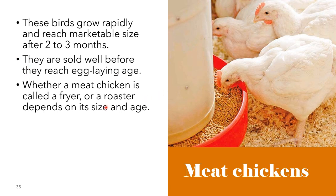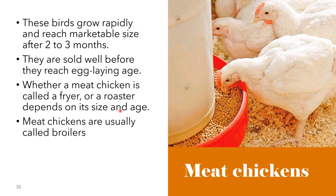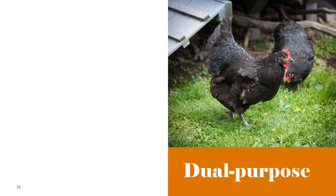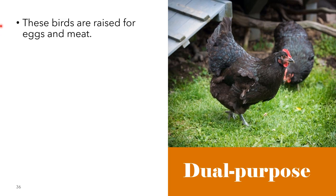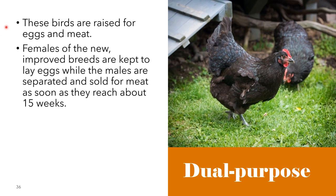Whether a meat chicken is called a fryer or a roaster depends on its size and age. Meat chickens are usually called broilers. Another type of chicken is the dual-purpose type. These are birds that are raised for both eggs and meat. The females of improved breeds are kept to lay eggs, while the males are separated and sold for meat as soon as they reach about 15 weeks. The dual-purpose hens are sold for meat at the end of the laying time. Country chickens, roaming free in most villages of the world, are a kind of dual-purpose bird.